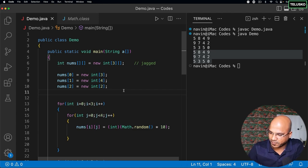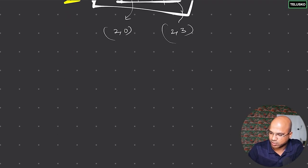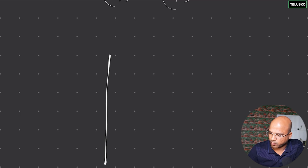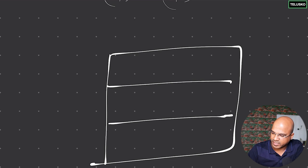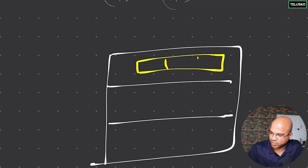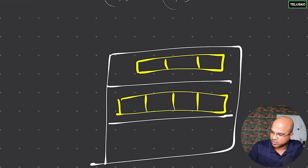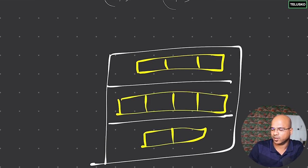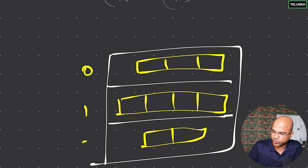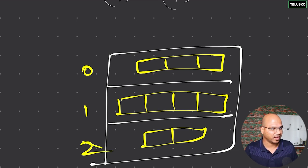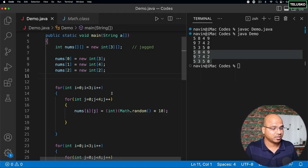To visualize this, imagine an outer box containing three rows. Each row has its own inner box of a different size: the first box is size 3, the second is size 4, and the third is size 2. So for index 0 we have 3 elements, for index 1 we have 4, and for index 2 we have 2 — different sizes at different locations.